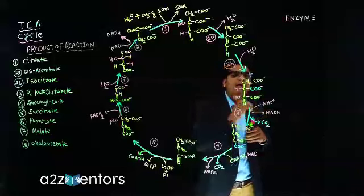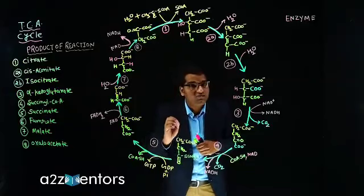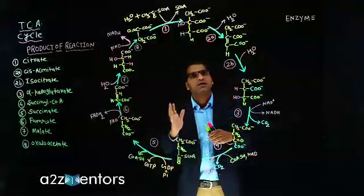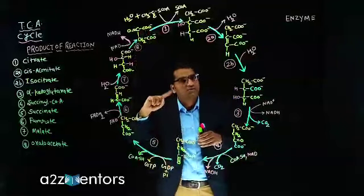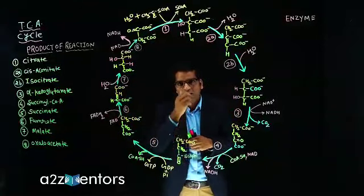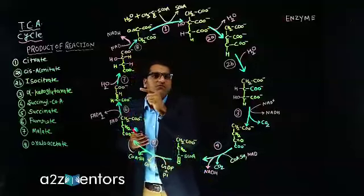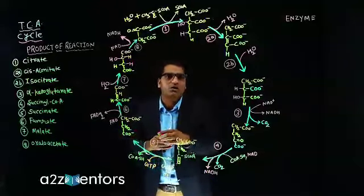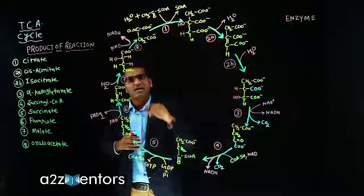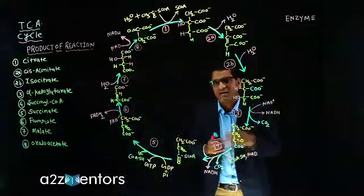A special type of enzyme called pyruvate translocate is responsible for the translocation of pyruvate from cytoplasm to the mitochondrial matrix. When pyruvate enters the mitochondrial matrix, before entering the TCA cycle it must be converted into acetyl coenzyme A.